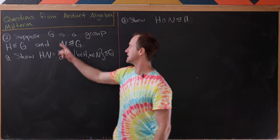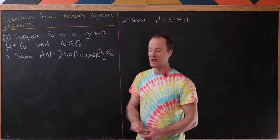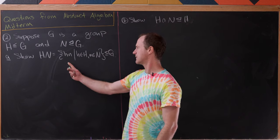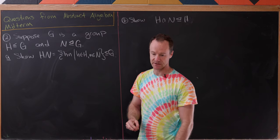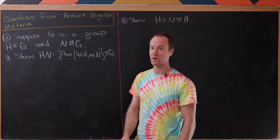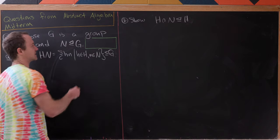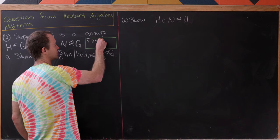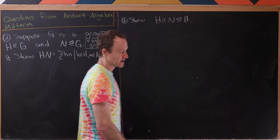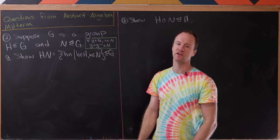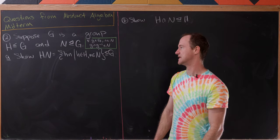Now for our second problem. Let's suppose that G is a group, H is a subgroup of G, and N is a normal subgroup of G. We'll show that HN — everything of the form little h times little n, where little h comes from H and little n comes from N — is a subgroup of G. Since N is normal, we'll need to use that fact. The normality condition means: for all little g in G and little n in N, we have g·n·g⁻¹ is an element of N.